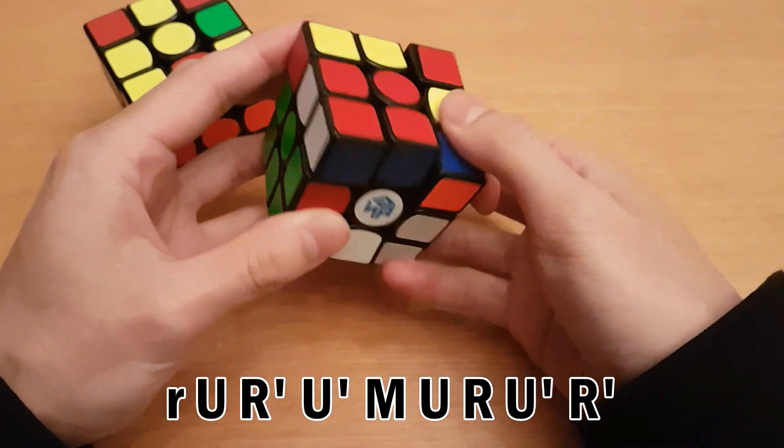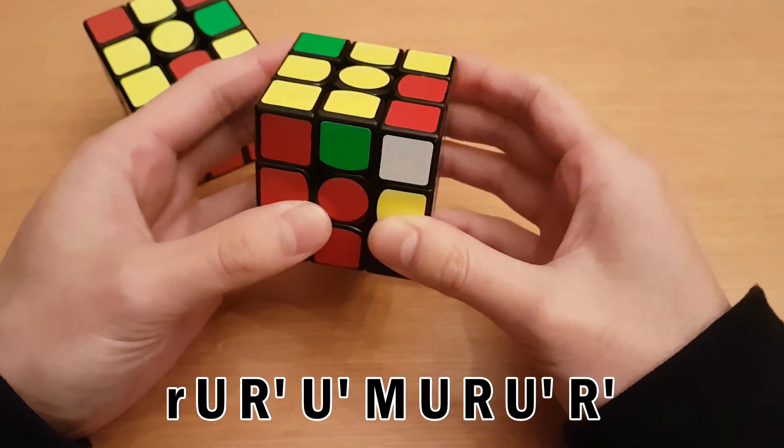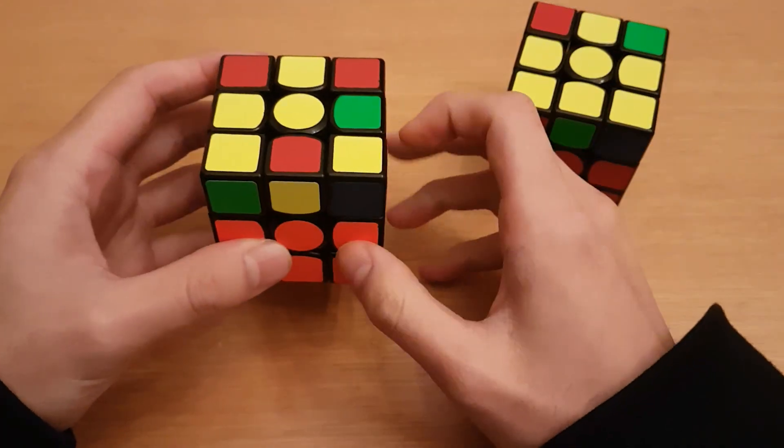The reverse is: sexy move with a wide turn at the beginning, then M down, then reverse sexy move. Here's how it can be applied.